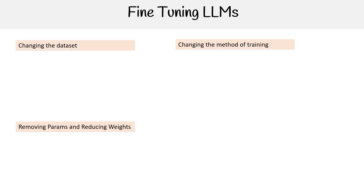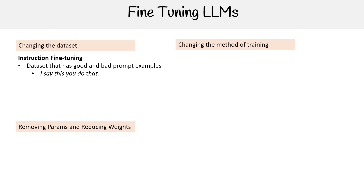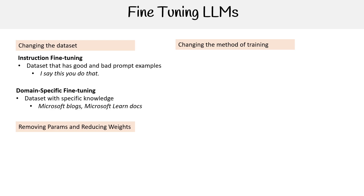Now let's talk about the types of fine tuning we can do, because there are a lot of approaches. First, let's talk about changing the data set. We could do instruction fine tuning — that's where we take a data set and tell exactly what we want, like 'I say this, you do that.' You're giving an example of what a person says and what the outcome is. Then we have domain-specific fine tuning, where you're taking a knowledge base or a data set of specific knowledge to update the model on that knowledge. For example, if we had a generic LLM and wanted to make it specifically for cloud computing, we could load it up with the most up-to-date cloud data or even our own material.